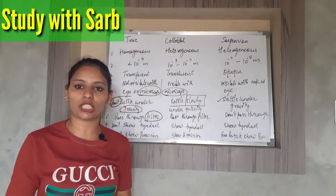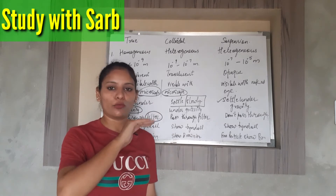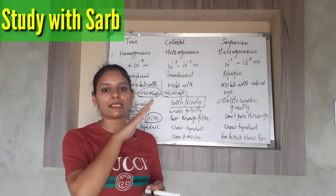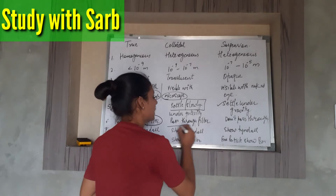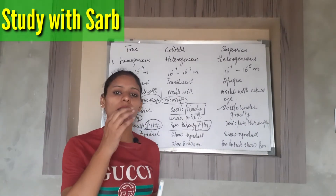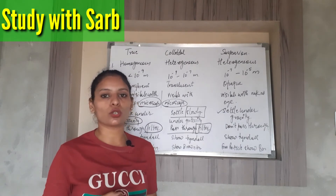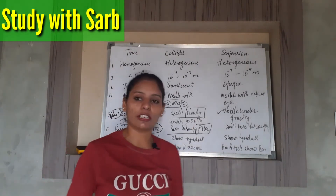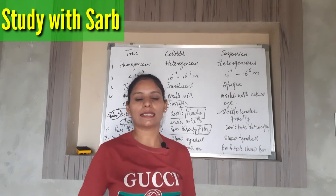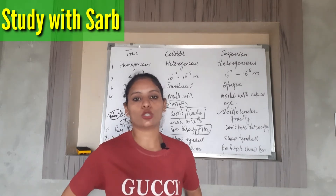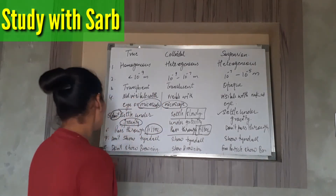The sixth point is about passing through filter paper. True solution particles cannot be separated using filter paper because the solute particles pass right through it along with the solvent. Colloidal solutions also pass through filter paper, but they can be separated using a parchment membrane. Suspension particles do not pass through filter paper — for example, if we filter sand and water, the sand stays on the filter paper and clean water collects below.